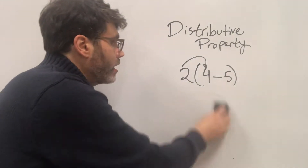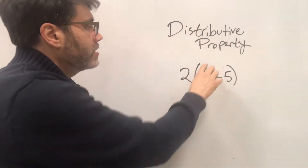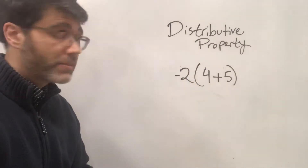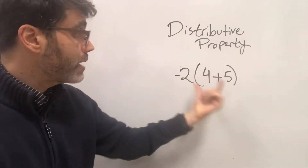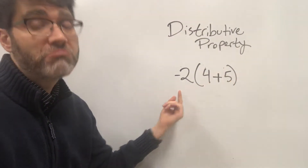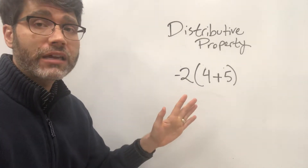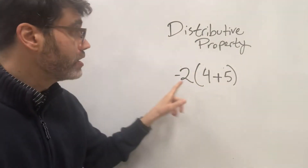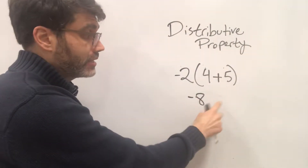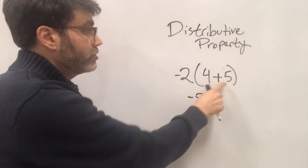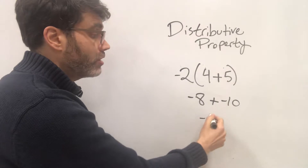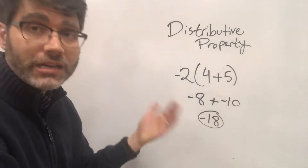Let's say we had 4 plus 5 in the parentheses and then a negative 2 on the outside. Using PEMDAS, we go with 4 plus 5 first — that's 9 — and then 9 times negative 2 is negative 18. Let's check with the distributive method: negative 2 times 4 is negative 8, we bring down the plus sign, and then negative 2 times 5 is negative 10. Negative 8 plus negative 10 is also negative 18. Either way, we get negative 18.